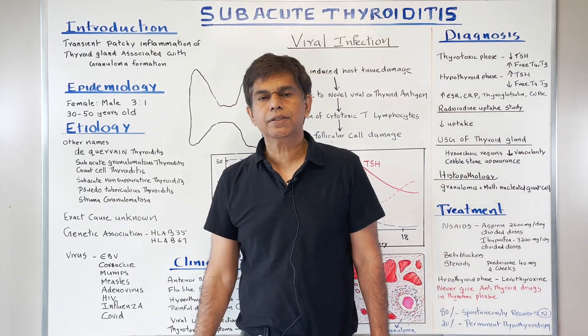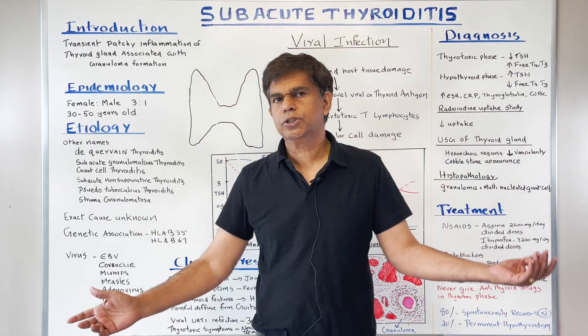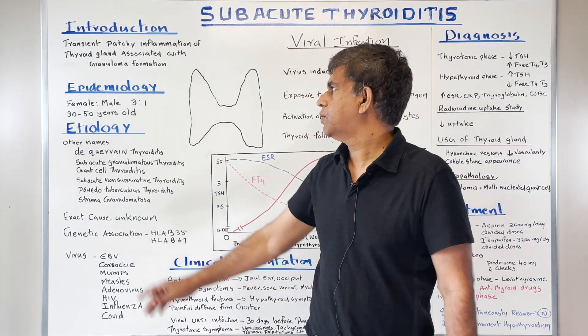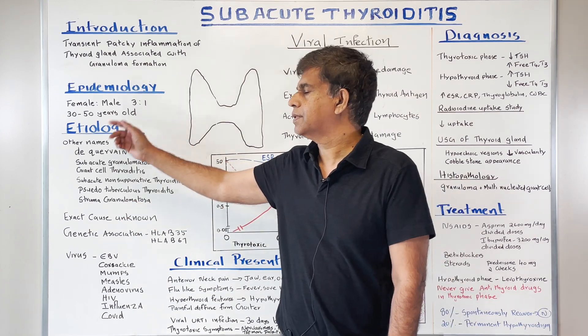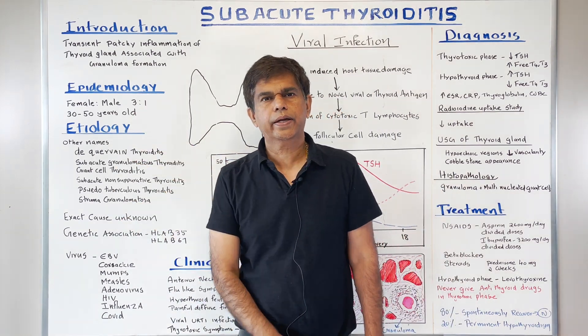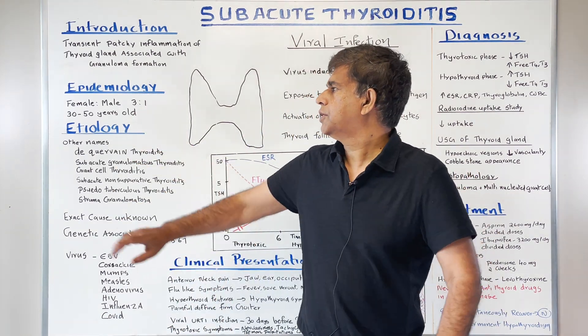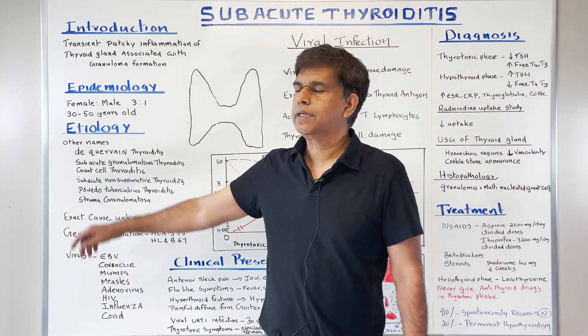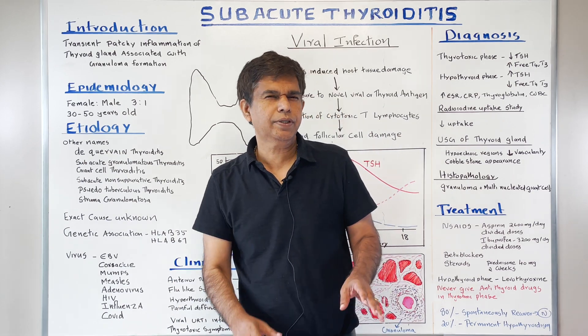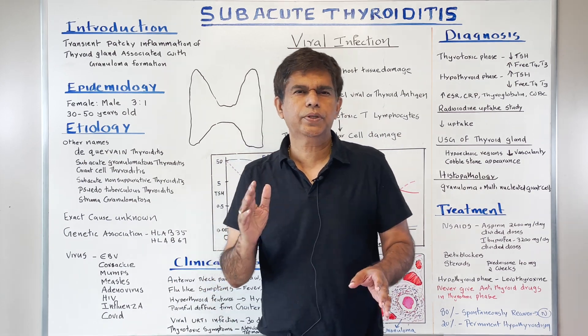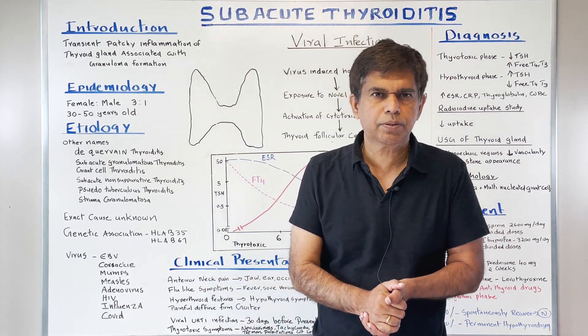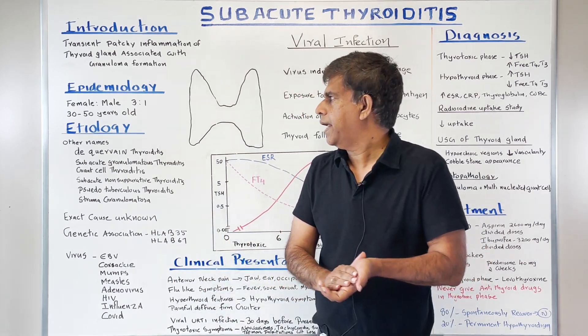Let's look at the epidemiology. It is more common in females, with a ratio of 3 to 1. The age distribution is around 30 to 50 years, with a peak around 40 to 50 years.